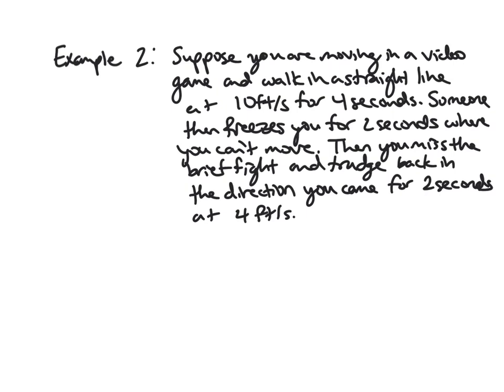So let's look at another one that maybe isn't quite as simple. We'll say we're in a video game. You're walking in a straight line, moving 10 feet per second for 4 seconds. Then someone hits you with a stun, and you're frozen for 2 seconds and can't move, so you have velocity 0. Then you trudge back in the direction you came for a couple seconds at a slower pace of 4 feet per second. Same question: How far have you traveled? What is your net distance?